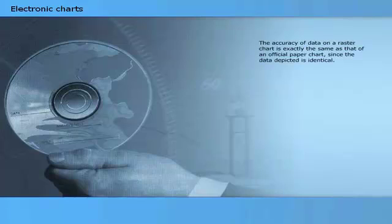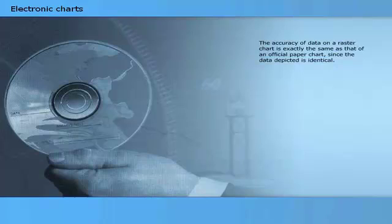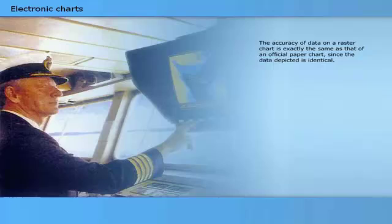The accuracy of data on a raster chart is exactly the same as that of an official paper chart, since the data depicted is identical. Electronic chart systems used to display raster charts convert the WGS84 coordinates obtained from a GPS receiver into coordinates referenced to the datum of the relevant raster chart.